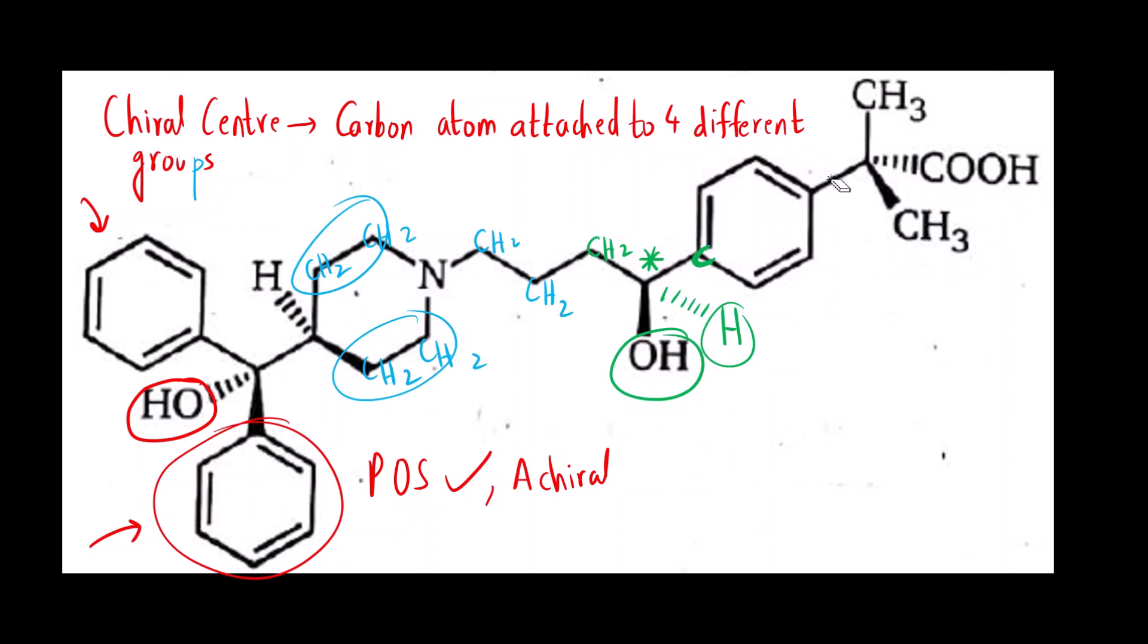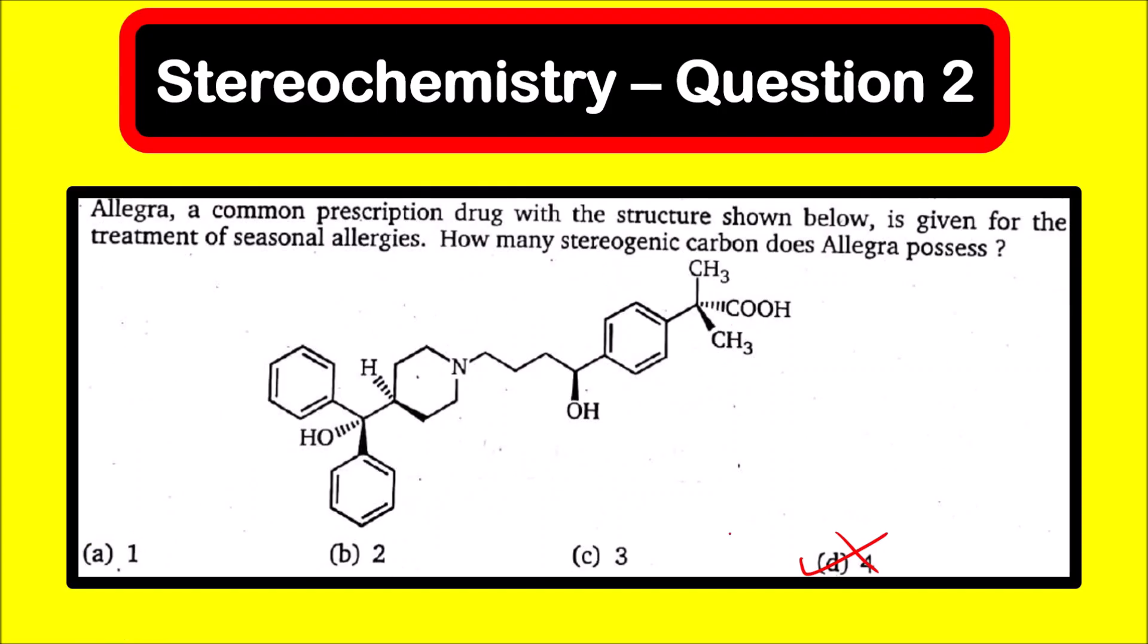So it is very important to check the groups carefully. Here you can see out of the four chiral carbon that we had selected before, only how many carbons are remaining? Only one. Only this green one is chiral. What is the correct answer for this question? The correct answer is option A. There is only one chiral center that is this carbon. This was a good question. I hope you have understood the solution. Thank you.